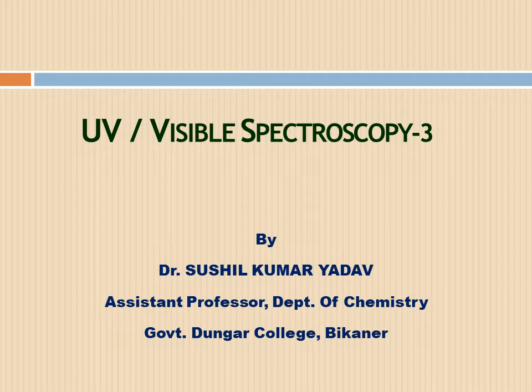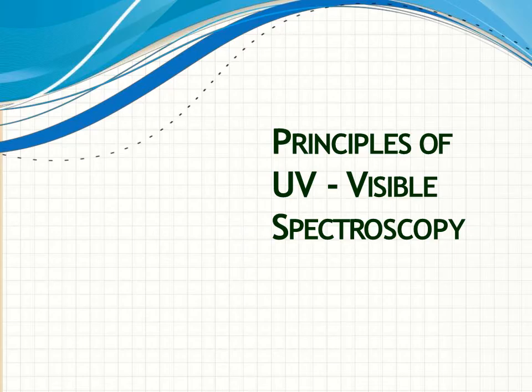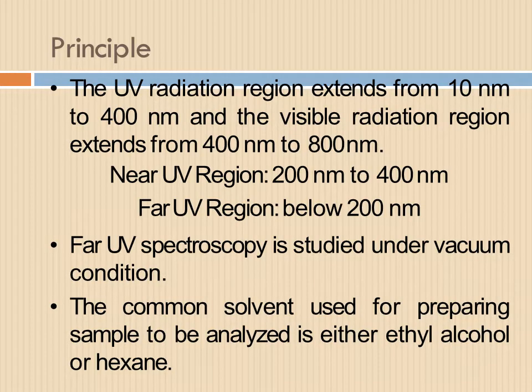Today we discuss the Principles of UV Visible Spectroscopy and Electronic Transition in Part 3. The UV radiation region extends from 10 nm to 400 nm and the visible radiation region extends from 400 nm to 800 nm. Near UV region is 200 nm to 400 nm and far UV region is below 200 nm.